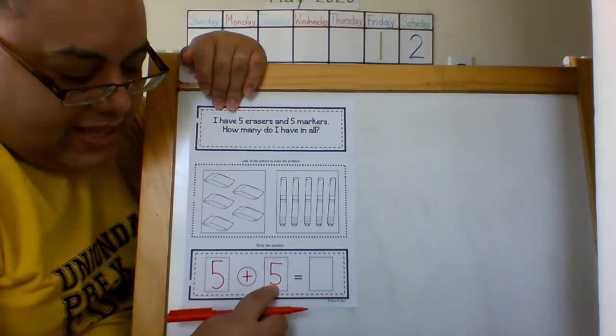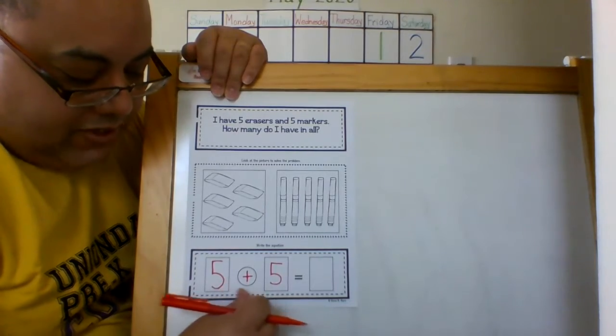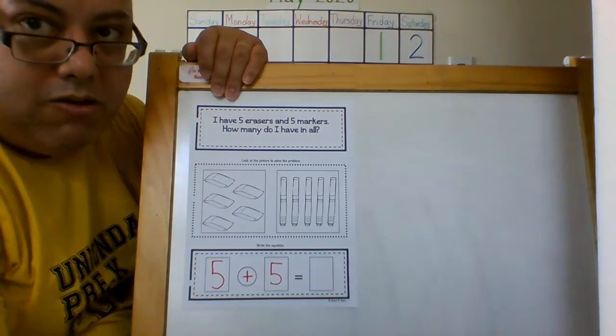number five where's the hat? That is a five for the markers. So I have five erasers plus five markers equals how many in all?